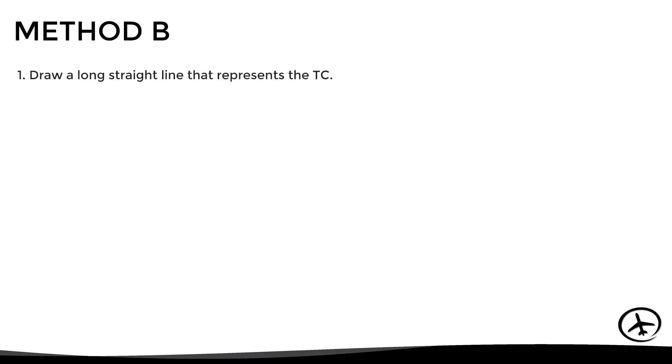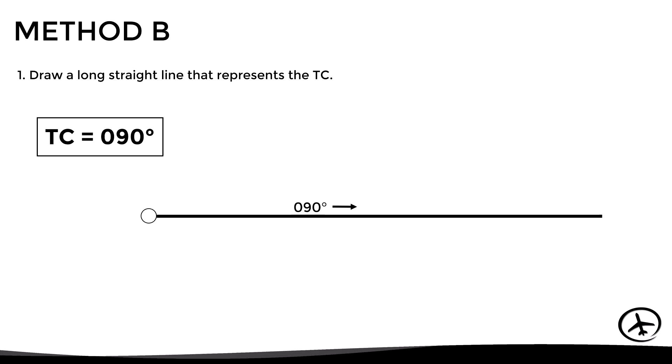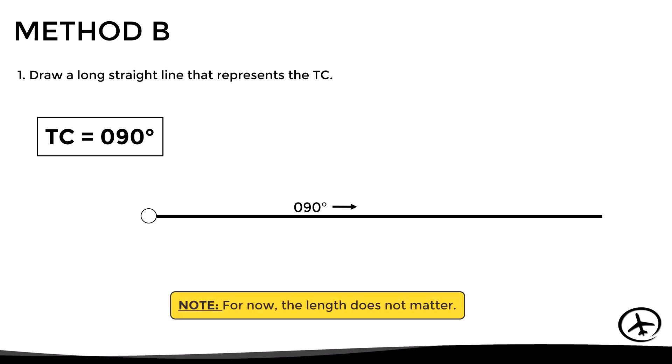Now let's look at Method B. Here the first step is to draw a long straight line that represents the desired true course of the route. In this example the desired course or track is 090, so we draw a line accordingly. Note that the length of this segment does not matter at this stage — we will see why later.